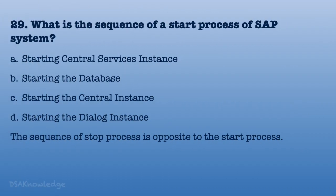What is the sequence of the SAP system start process? The steps are: 1. Start the central services instance. 2. Start the database. 3. Start the central instance. 4. Start the dialog instance. The stop sequence is the opposite of the start sequence.